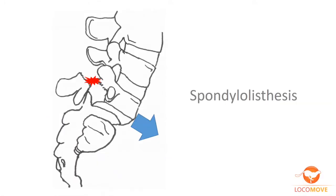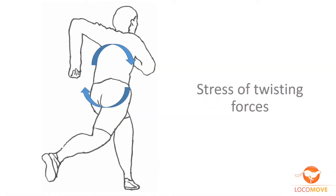Runners sometimes suffer from spondylolisthesis, which gives constant back pain. Spondylolisthesis stems from twisting force on your lumbar spine. The lumbar spine has a narrow range of motion for rotation.